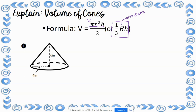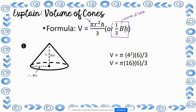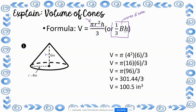This cone has a radius of 4 and a height of 6. Plugging into the formula: pi times 4 squared times 6, divided by 3. Doing exponents first: 4 squared is 16. Then pi times 16 times 6 divided by 3. 16 times 6 is 96; 3.14 times 96 is 301.44; divided by 3 gives a volume of 100.5 inches cubed.